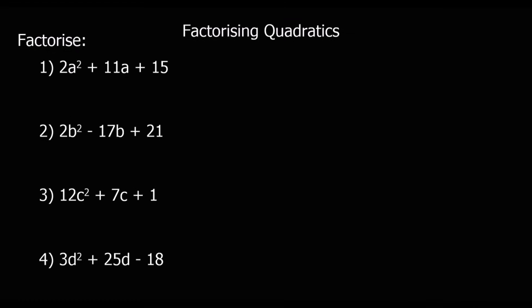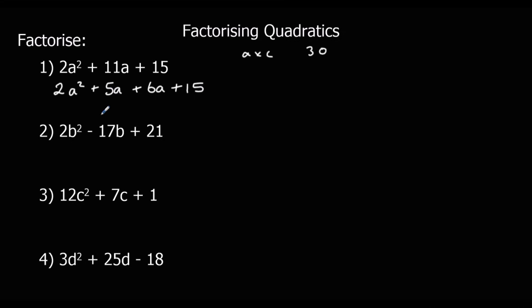Here are four questions — pause the video and have a go, following the same process: a times c, rewrite it, cut it down the middle, factorise each half. For the first one: a times c is 30, and the factors of 30 that make 11 are 5 and 6. So we get 2a squared plus 5a plus 6a plus 15. Factorising the first half, take out a, leaving 2a plus 5. The second half gives 2a plus 5 again, and that's a plus 3. So the two brackets are (a plus 3)(2a plus 5).